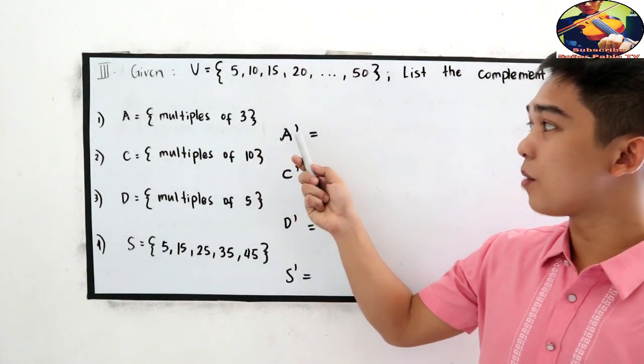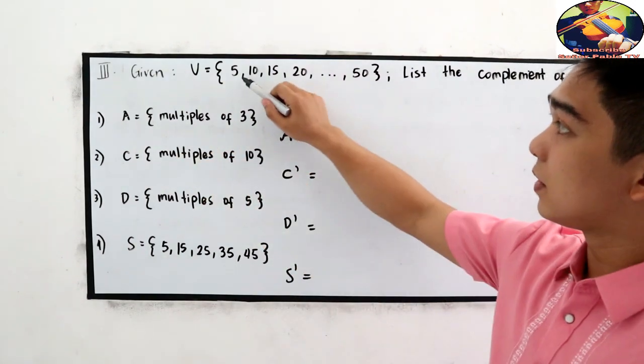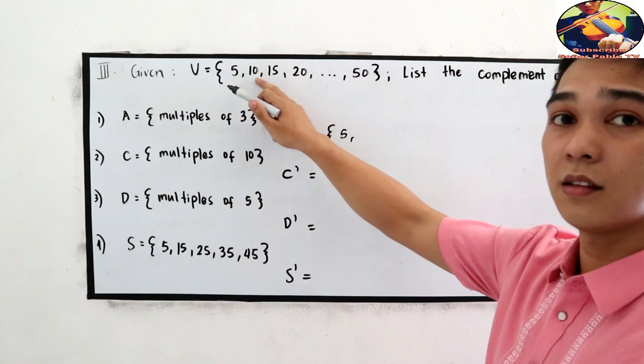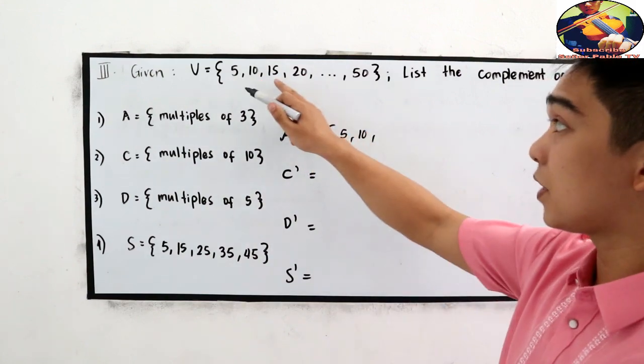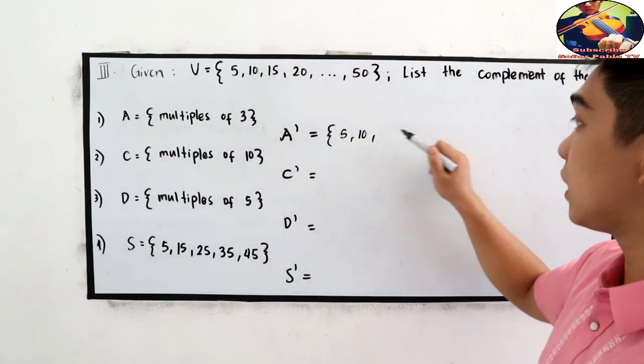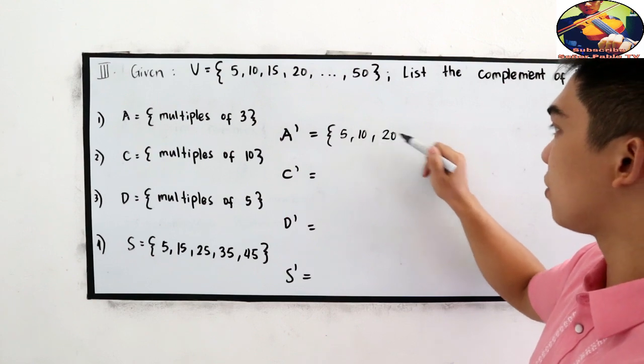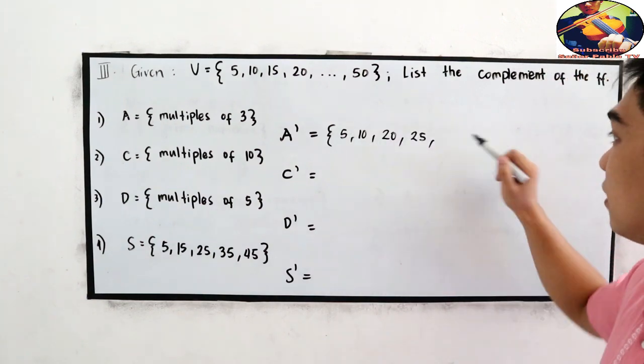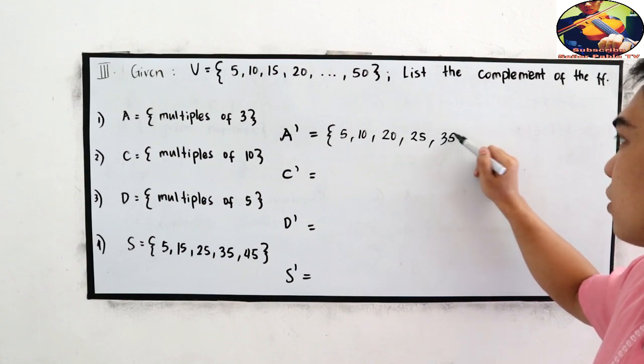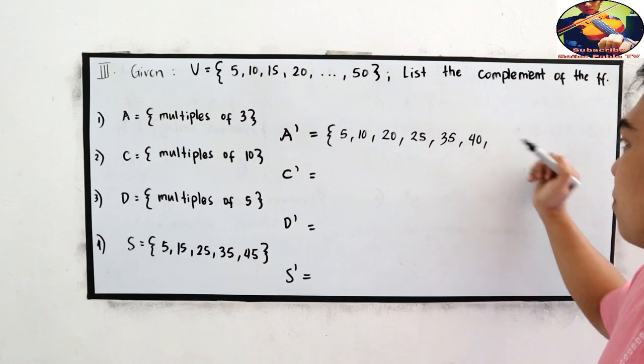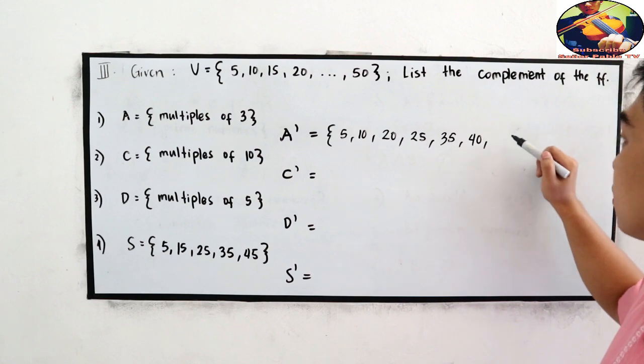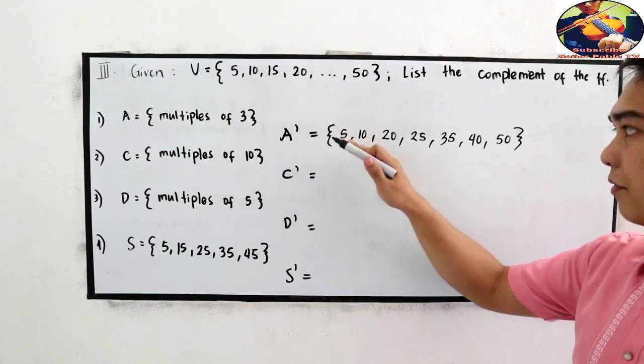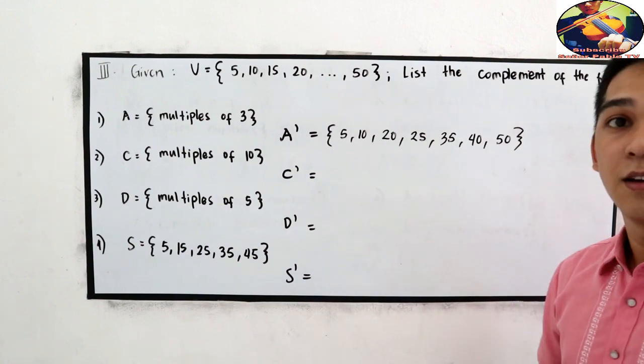Number one, A complement or A prime. Multiples of three. Is five a multiple of three? No. So we can write five. Ten is not a multiple of three of course. Fifteen, it is a multiple of three. So we will not include fifteen. Twenty is not a multiple of three. So we will include for A prime. Twenty-five is not a multiple of three. Thirty, multiple of three. Thirty-five is not a multiple of three. So we can write here. Forty is not a multiple of three. Forty-five, multiple of three. So we can write forty, then fifty. So A complement is five, ten, twenty, twenty-five, thirty-five, forty, and fifty.